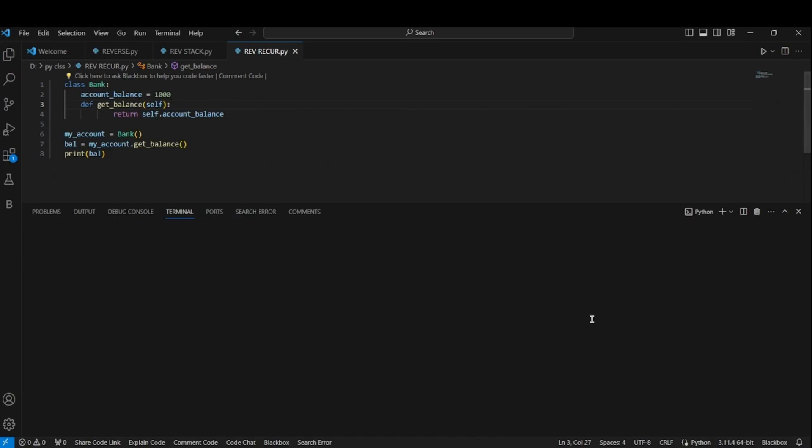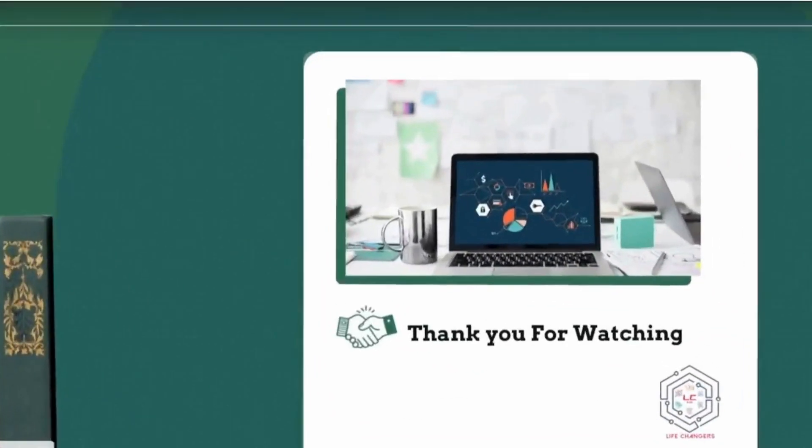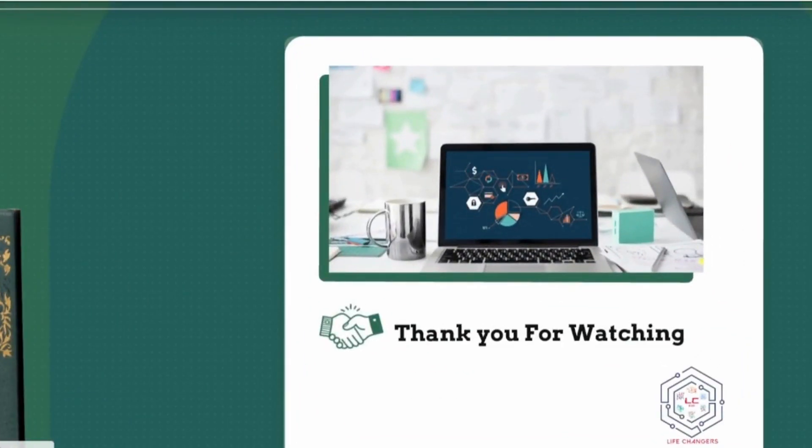Use the self parameter to access the attributes. If you want to know the output of this code, let's run it. So it is using the parameters to access the phone balance. So these are all the things. We are just coming to the end of the session. Thank you for watching.